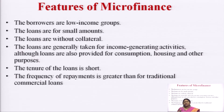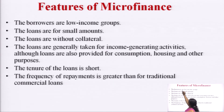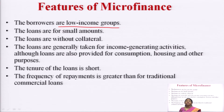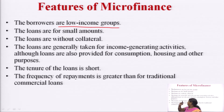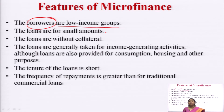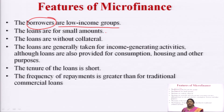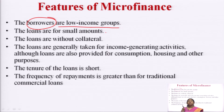There are specific features of microfinance which we all need to know. The first important feature is that the borrowers are low income groups, as explained in the definition. When it comes to microfinance, the funds are available for the low income group — the people who are taking microfinance are low income group people. The second feature is that they are of small amounts — they start from 20,000 or 50,000 to a certain level — so that lower income people can repay that amount.